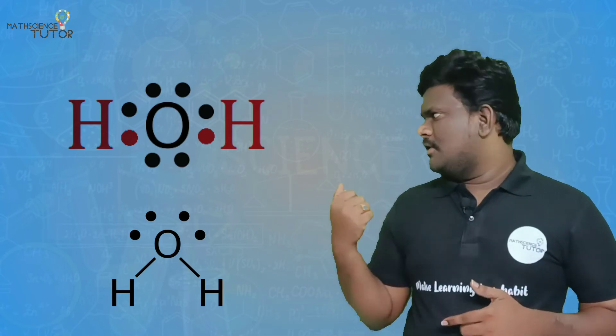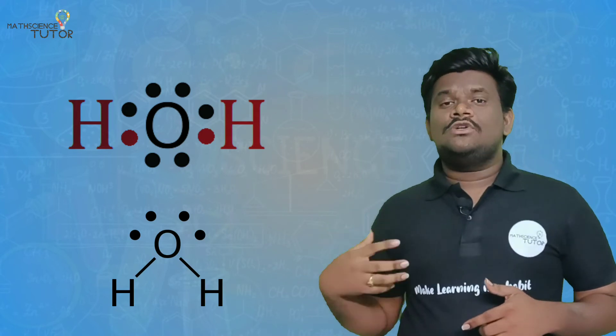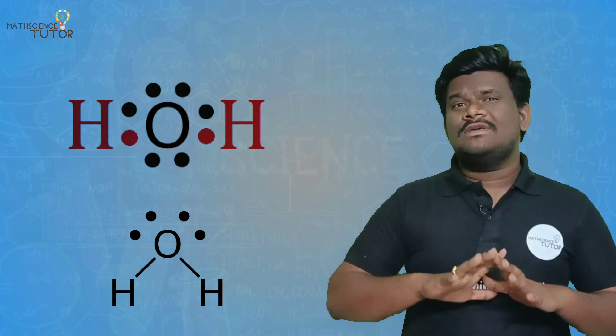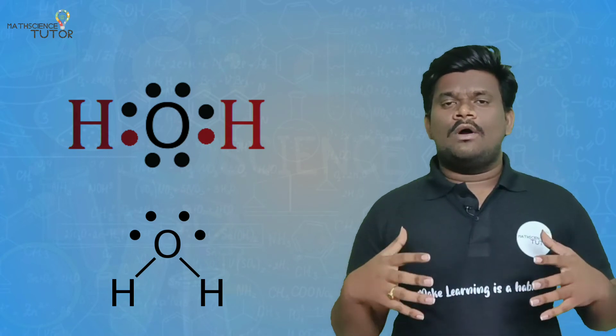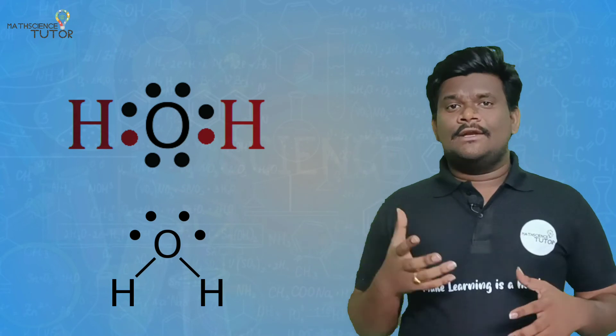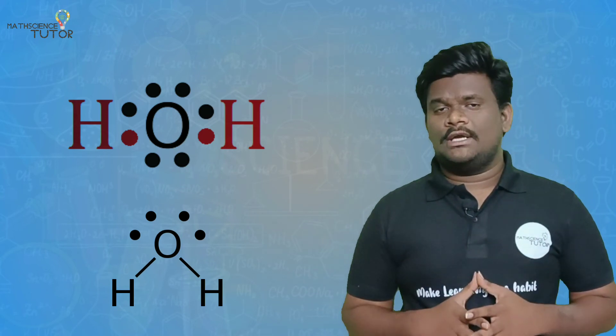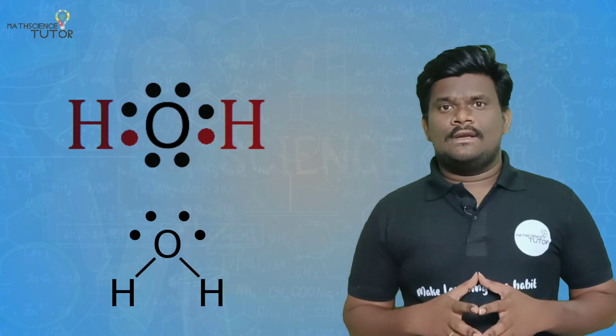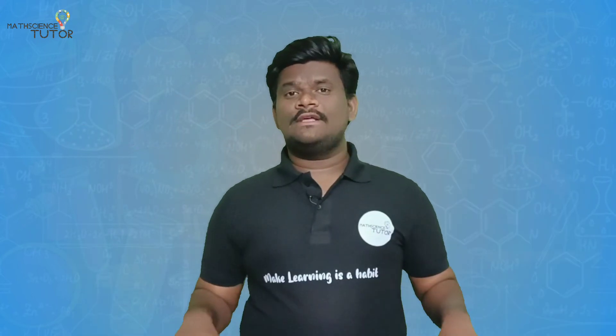H2O is octetally stable and hydrogen is duplately stable. In water, the remaining electrons on oxygen form lone pairs of electrons. We can draw the Lewis dot structure for H2O, arranging valence electrons in such a manner to achieve stability for both atoms and the molecule as a whole.